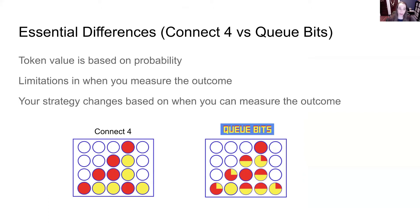The token value is based on probability. It has limitations in when you measure the outcome, when you know what the value is going to be.